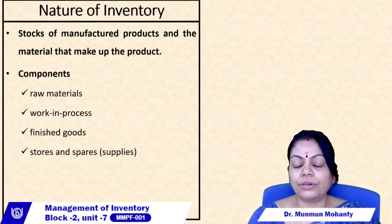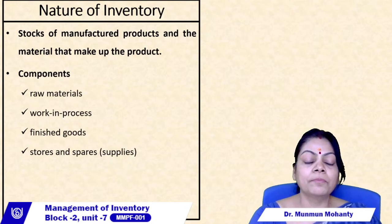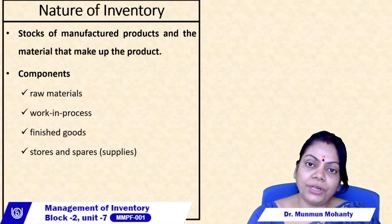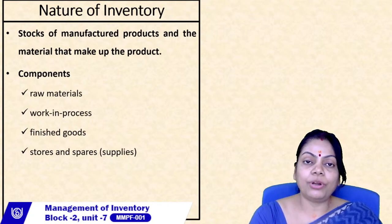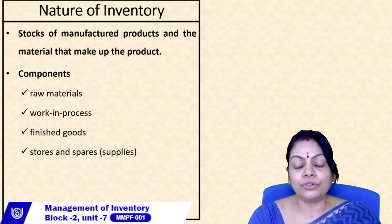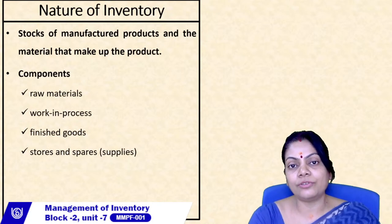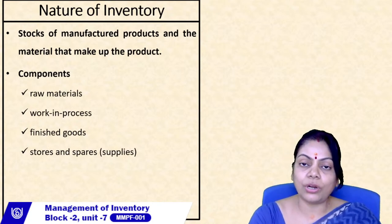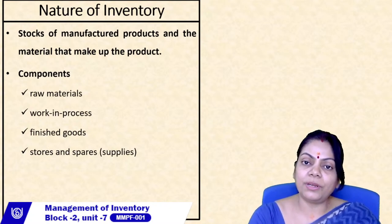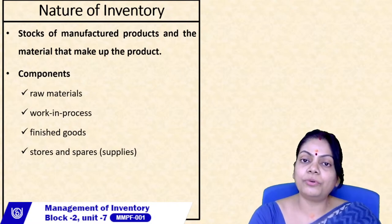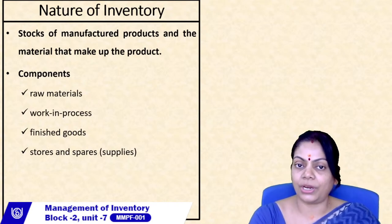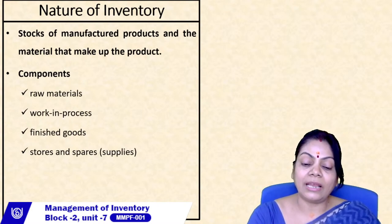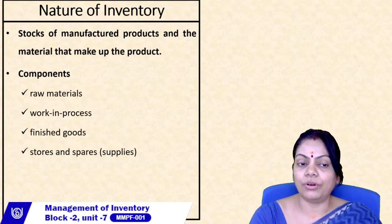Raw material is the item that is processed to produce the final good the company sells. We need to keep raw material because there is a gap between placing an order and receiving it. I can't just purchase whatever is needed for the day and then place an order for the next day. I need some stock of raw material to operate during that waiting period. This time between placing an order and receiving it is known as the lead time.